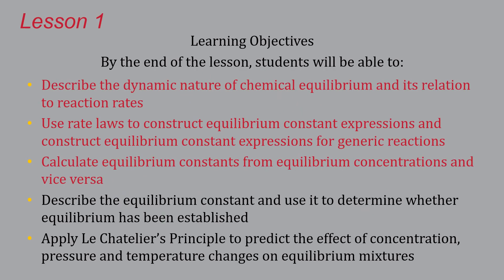We'll split up this chapter in about three lessons. For this first lesson you're going to be able to describe the nature of chemical equilibrium and how it's related to reaction rates that we just studied. We're going to use rate laws to construct this new thing called an equilibrium constant expression, and we're going to calculate numerically equilibrium constants and concentrations for various systems. Toward the end you're going to be able to describe the equilibrium constant and use it to see if something actually is at equilibrium or if it's still reacting spontaneously. Finally, we're going to learn about something called Le Chatelier's Principle, which predicts the effects of changes to equilibriums and which way the system will react spontaneously to reach equilibrium.